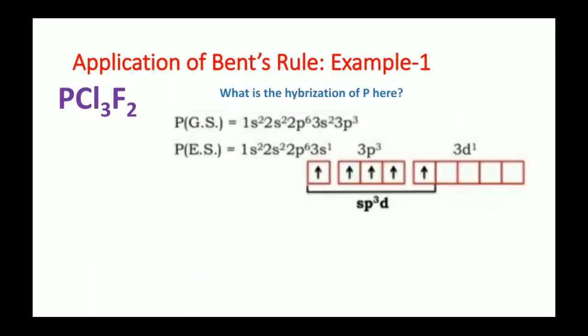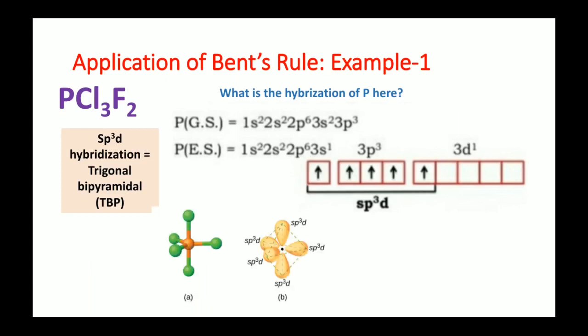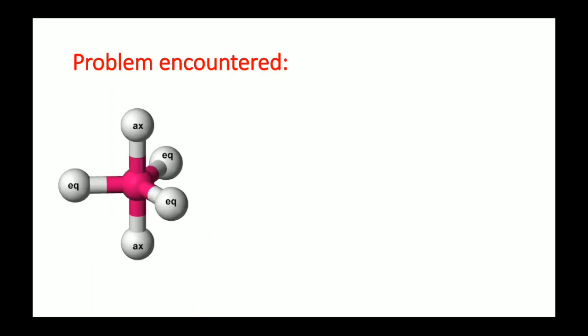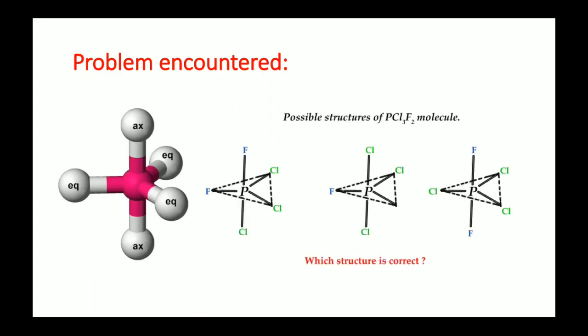Example 1: PCl₃F₂. The hybridization of phosphorus: phosphorus has the electronic configuration 3s² 3p³. In the excited state, one electron from the 3s orbital jumps to the 3d orbital, giving 3s¹ 3p³ 3d¹. These five orbitals form sp³d hybridization, giving a trigonal bipyramidal geometry. In this geometry there are two types of bonds: equatorial bonds and axial bonds. The question is which position — axial or equatorial — will chlorine and fluorine choose?